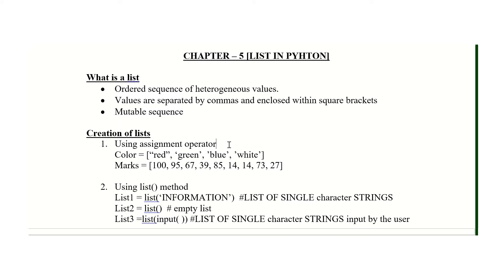Now, what is a mutable sequence? Mutable sequence means that elements of the list can be changed by the programmer at any point during execution of the program. There is no restriction or constraint on changing the elements of the list.